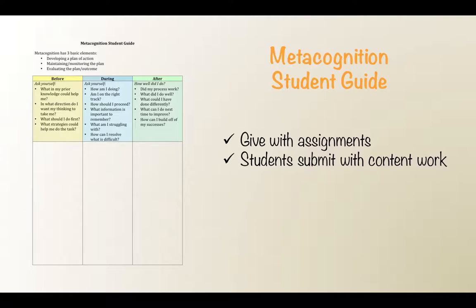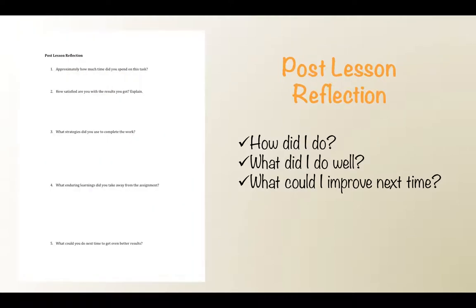This little form could be given along with assignments and turned in with the content work. It helps the student to plan, monitor, and reflect, and it helps you as the teacher to see their process and how it went. I'd say this one is for later in the process when students are comfortable doing all of the phases of metacognition and can easily articulate what they have been doing. Here's a quick written template for post-lesson reflection — before collecting an assignment, teachers can have students address these questions and submit with their work. I particularly call attention to how much time students spent and their perceived success with the task, so that students begin to make that correlation.